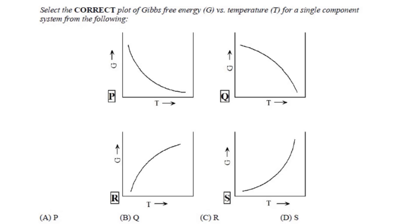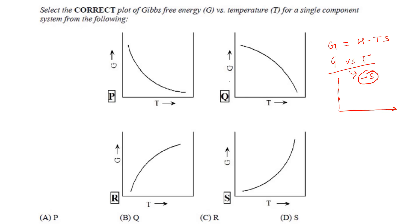Select the correct plot of Gibbs free energy versus temperature for a single component system. We know G = H − TS, and the slope of a G vs. T plot is −S. If entropy S were constant, the slope would be constant and the diagram would be a straight line. However, for a single component system, as temperature increases, entropy increases, so the slope becomes more negative.